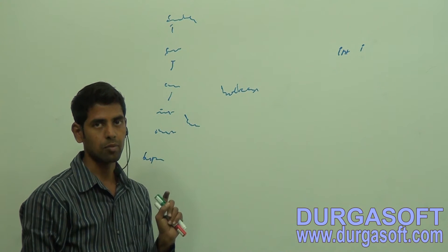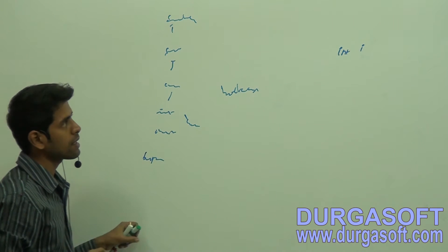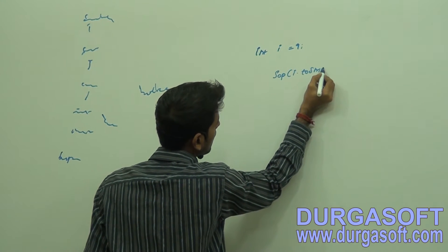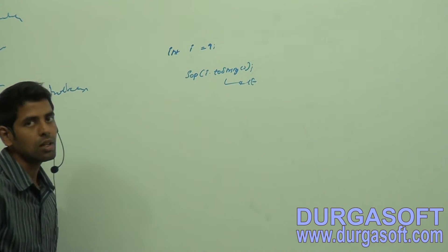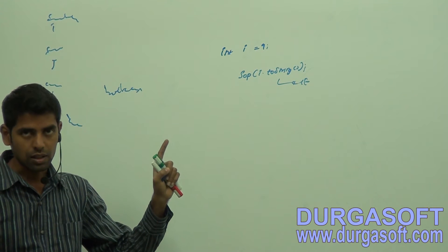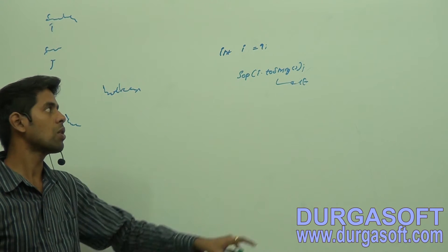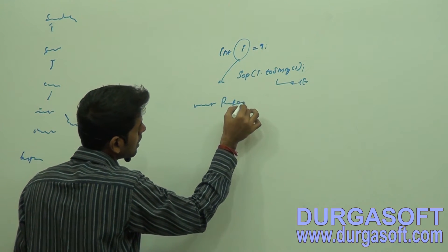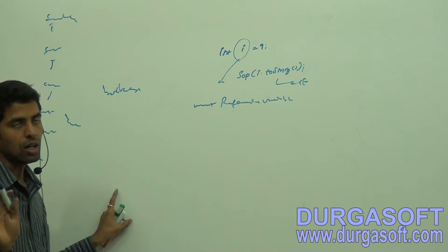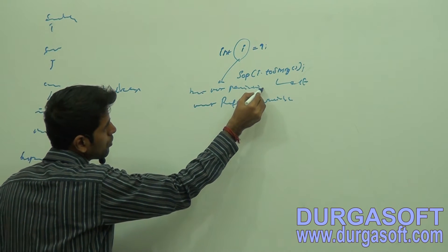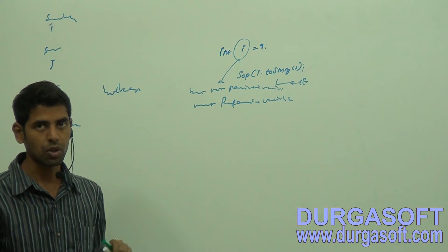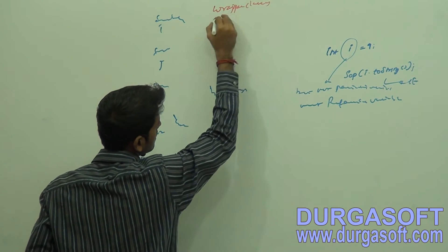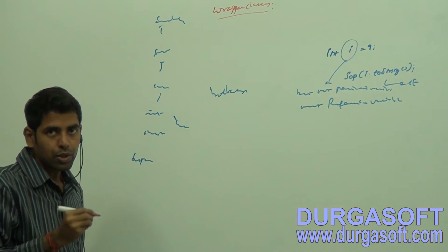Can I call any method on a primitive variable like i.toString()? No. If you call it, you will get a compile time error: 'i cannot be dereferenced.' In order to call any method on a variable, that variable must be a reference variable, not a primitive variable. That is what wrapper classes address - wrapping all primitive literals within an object.